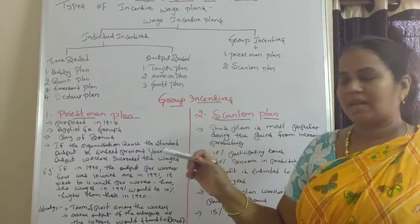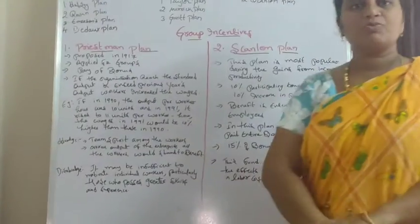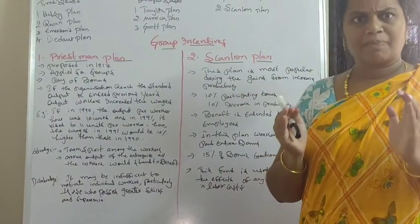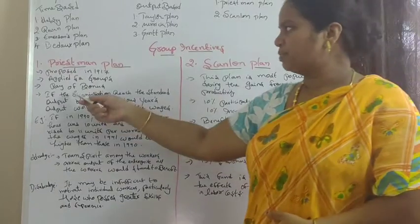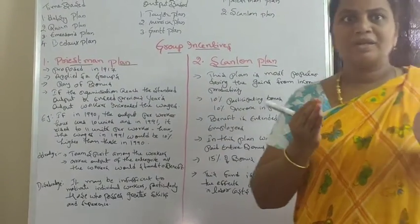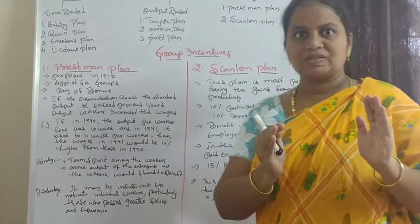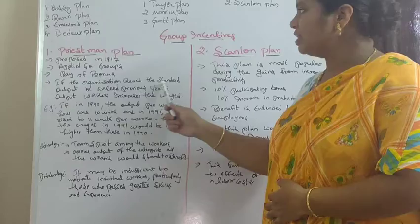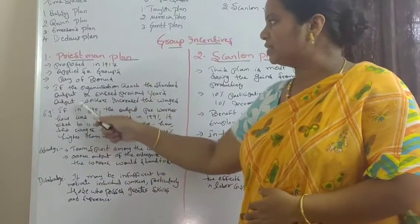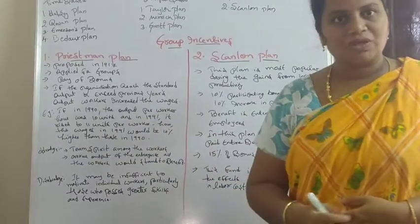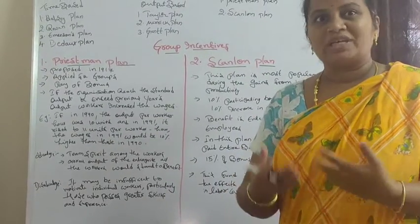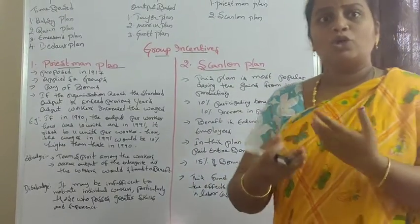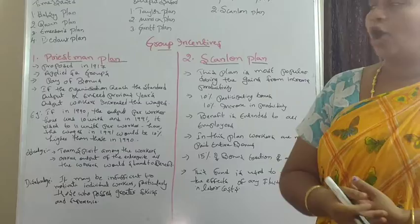The first topic is the Pristman Plan. It was proposed in 1970 and is applied only for groups. The bonus is based on standard output — if the organization reaches or exceeds the previous year's output, workers' wages are increased. The group has the capability to increase the efficiency of output.